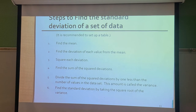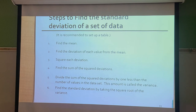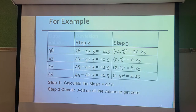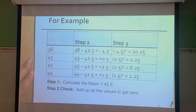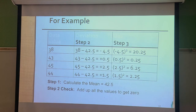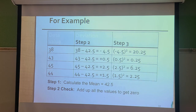Here are the steps to find the standard deviation, and it's recommended to set up a table. Step 1: find the mean. Step 2: find the deviation of each value from the mean. Step 3: square each deviation. Step 4: find the sum of the squared deviations. Step 5: divide that sum by one less than the number of data values. Step 6: find the standard deviation by taking the square root. For example, with data values 38, 43, 45, and 44, the average is 42.5.